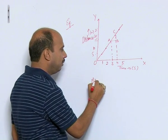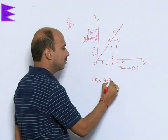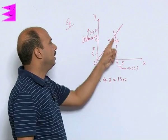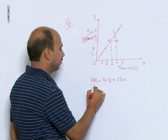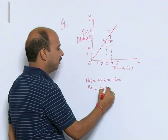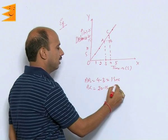We can write AB is equal to 4 minus 3 is equal to 1 second. BC is equal to, we can write 20 minus 15 meter is equal to that is 5 meter.